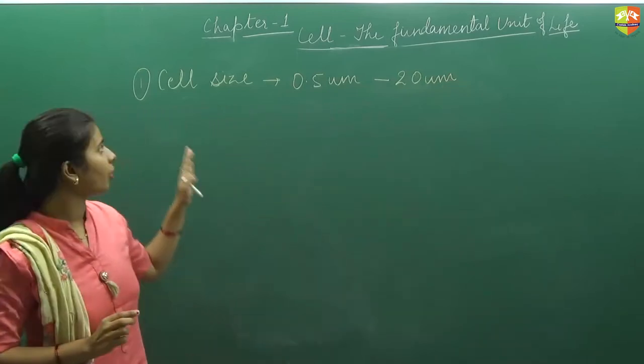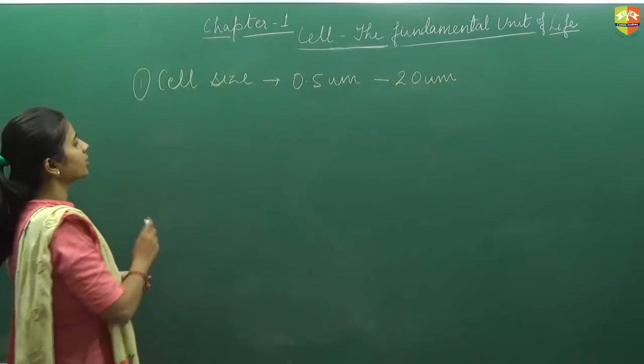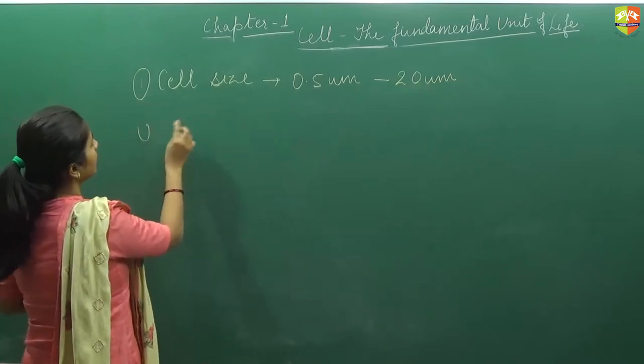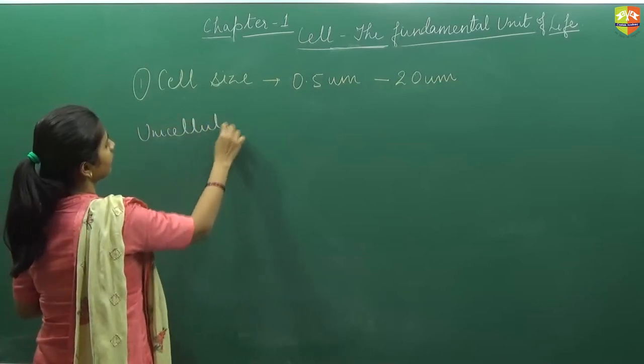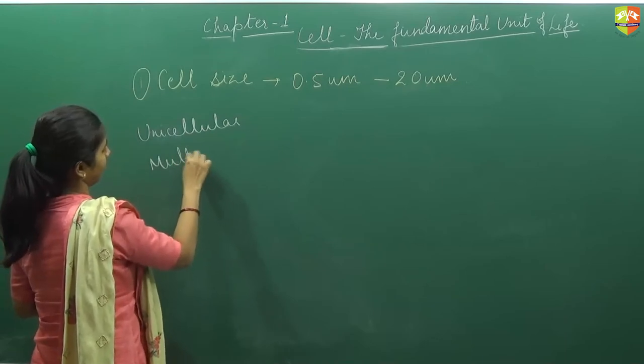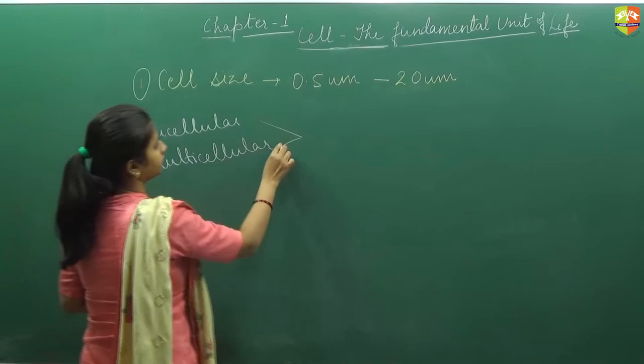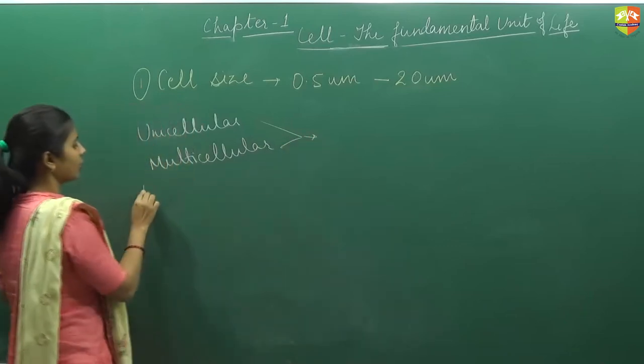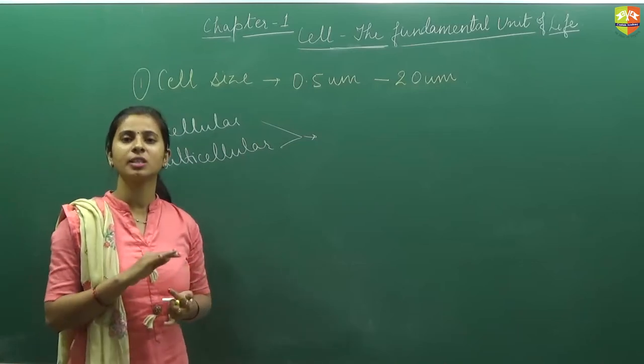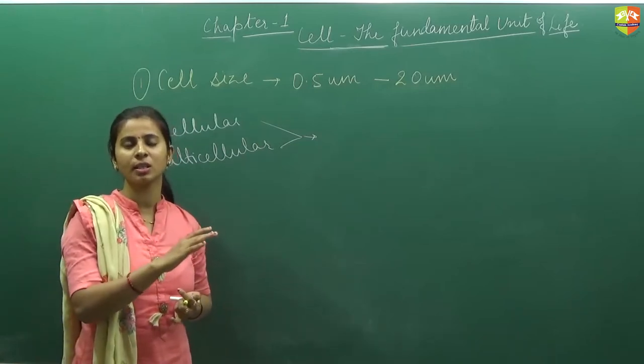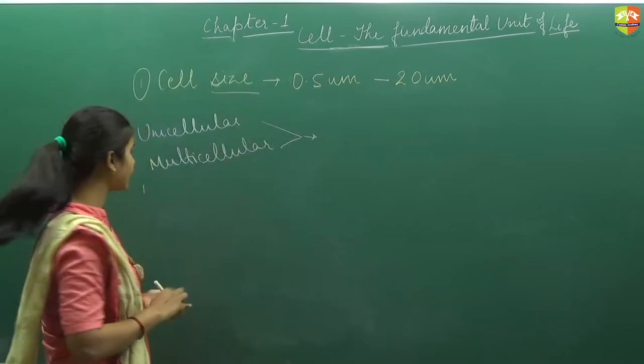Normal range of the size of the cell is 0.5 micrometer to 20 micrometer. In order to understand the size of different types of cells, first we will talk about human body. Then we will talk about plant. And then we will generally talk about which is the longest cell and which is the smallest cell on the basis of size.